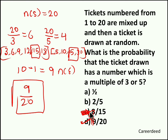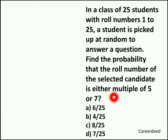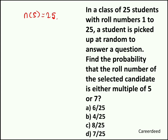Hope you understood the concept. Moving to our second question. In a class of 25 students with roll numbers 1 to 25, a student is picked up at random to answer a question. Find the probability that the roll number of the selected candidate is either a multiple of 5 or 7. This question is also similar to our previous question. Here we totally have 25 students, so the number of sample space is 25.